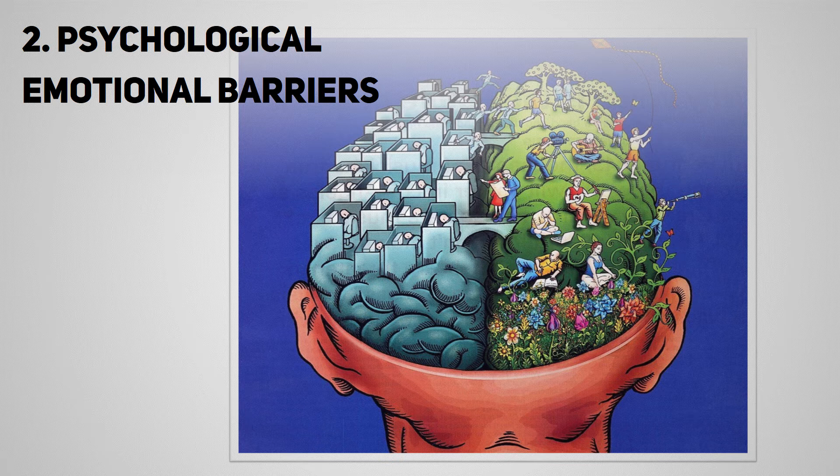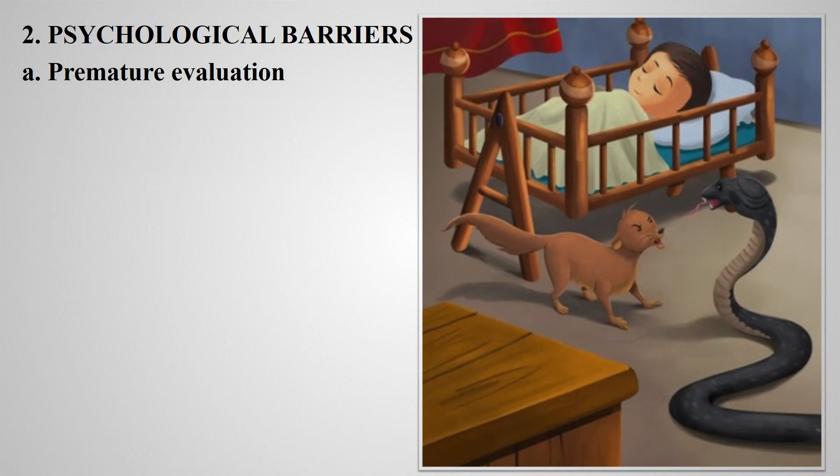The first psychological barrier is premature evaluation. Sometimes people evaluate the meaning of a message before the sender completes it. Such early evaluation may lead to barriers to communication — for example, the story of the mongoose and the snake.